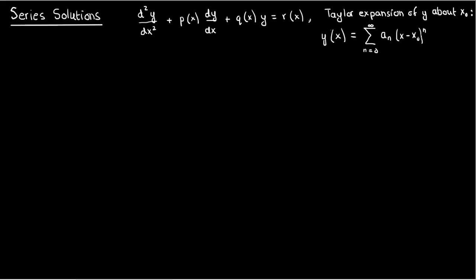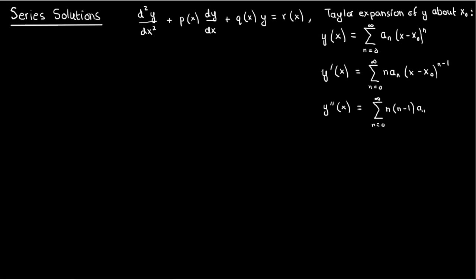Now remember Taylor series? If a function was continuous and differentiable, you could express it as an infinite series of polynomial terms being added together with the a_n's as your coefficients. Now what if we take this and substitute it into our differential equation? We'll need to find expressions for the first and second derivatives of y, but that's pretty simple.